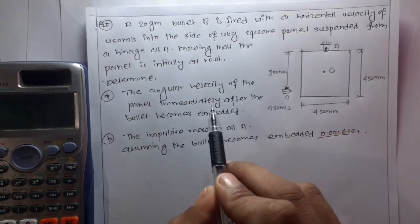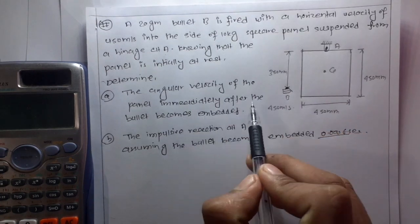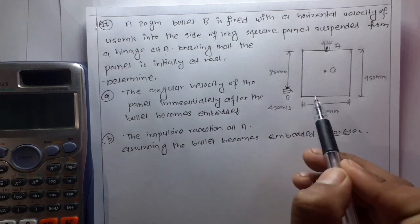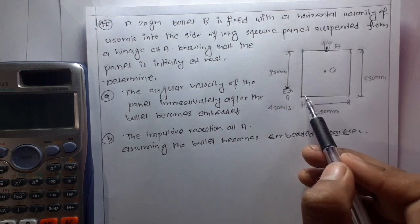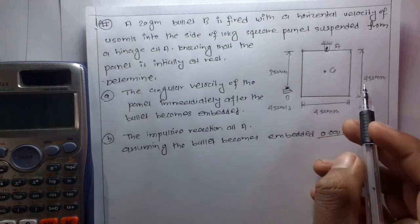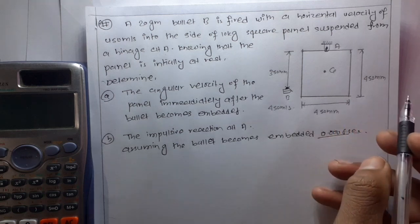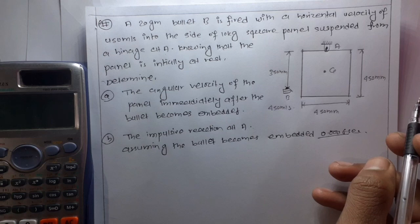We have to find the angular velocity of the panel immediately after the bullet becomes embedded. The angular velocity is to be found and the impulsive reaction is to be found. The time t is 0.006 seconds.